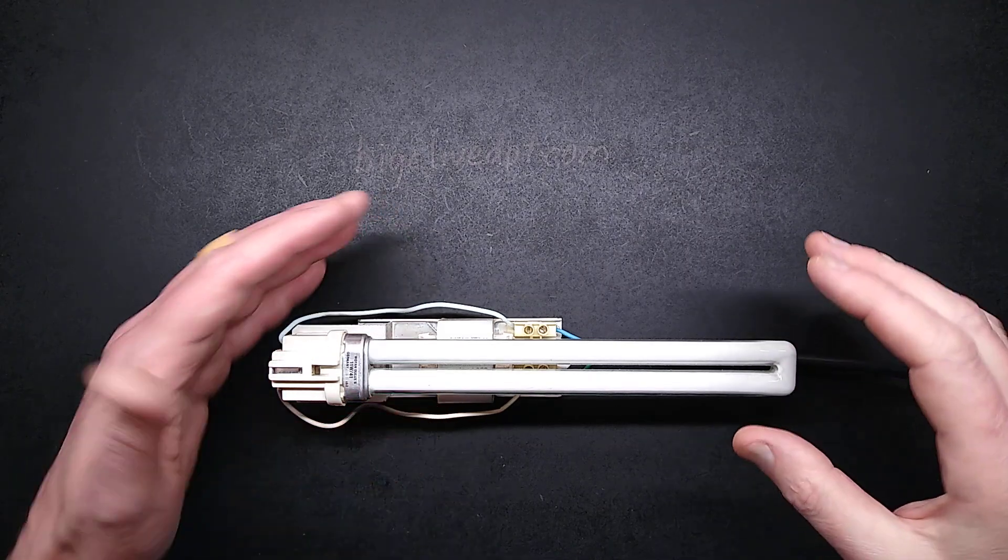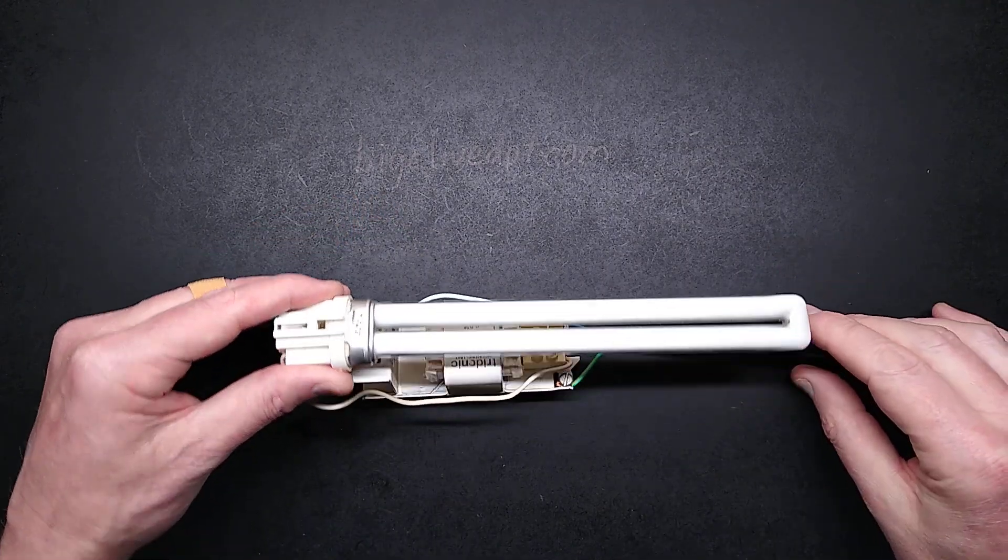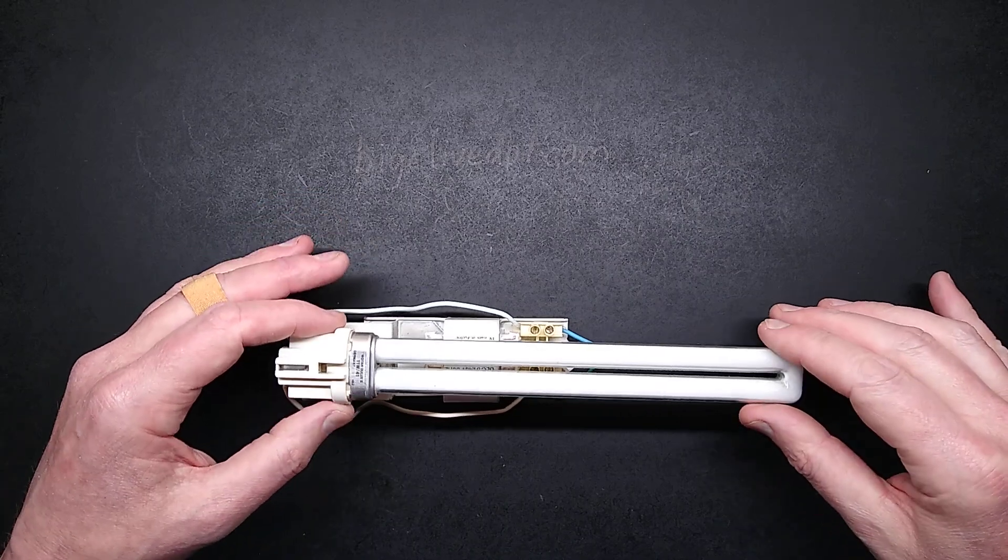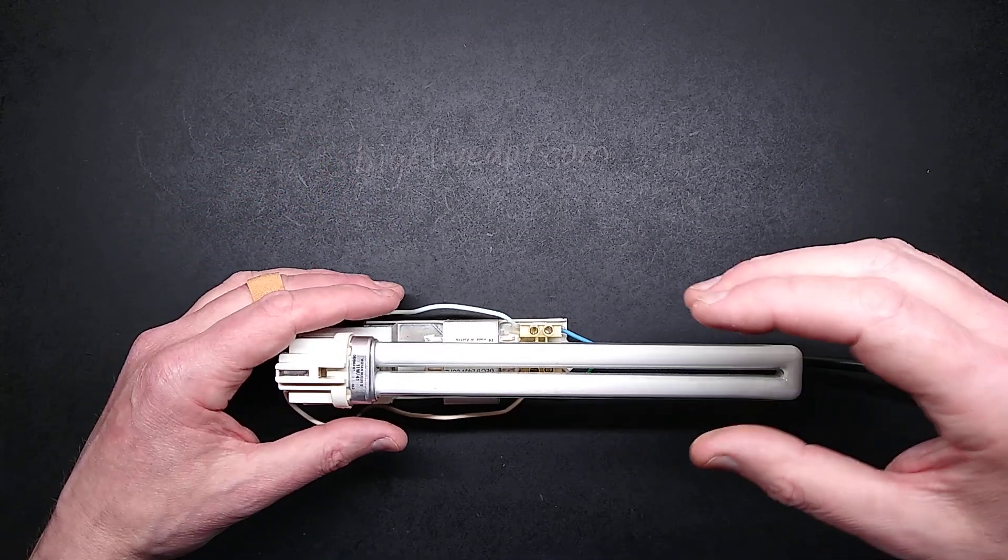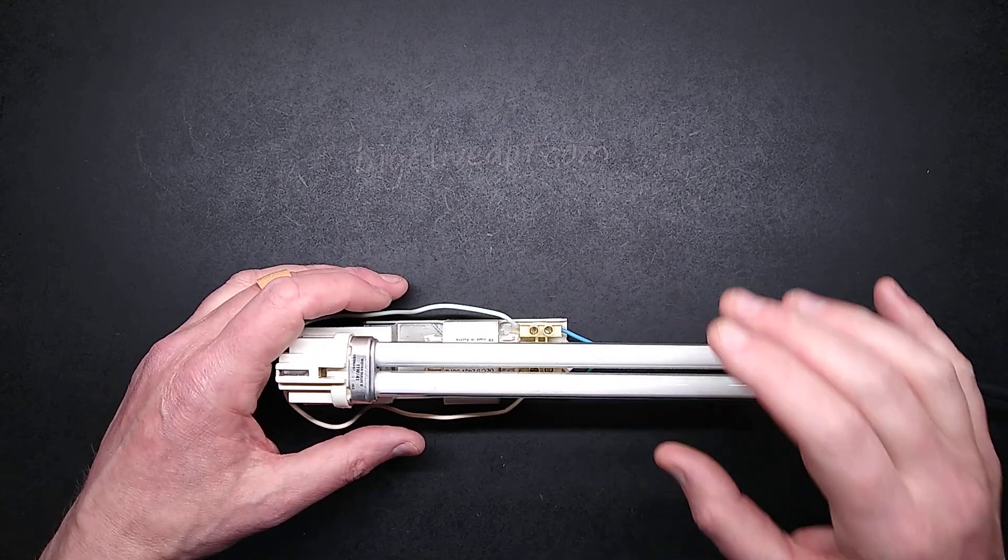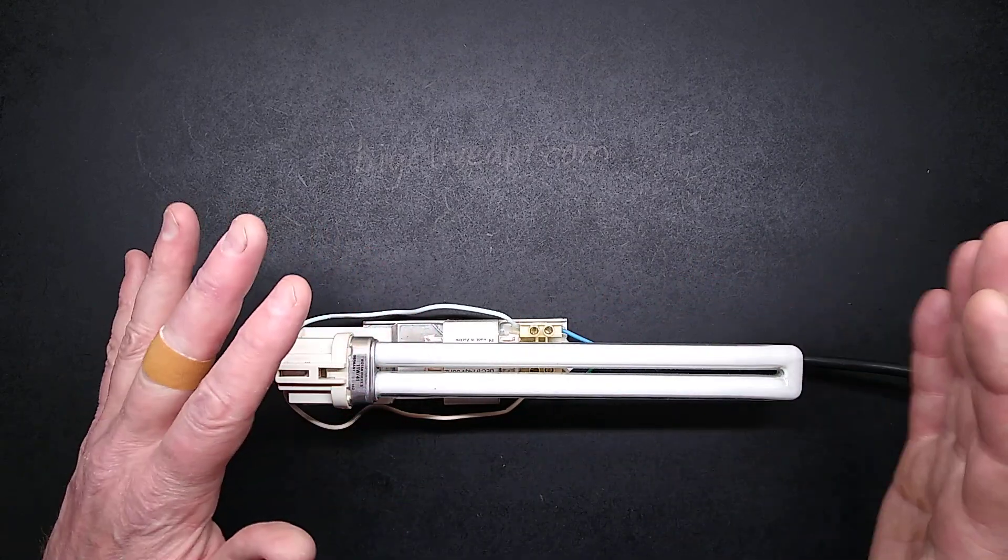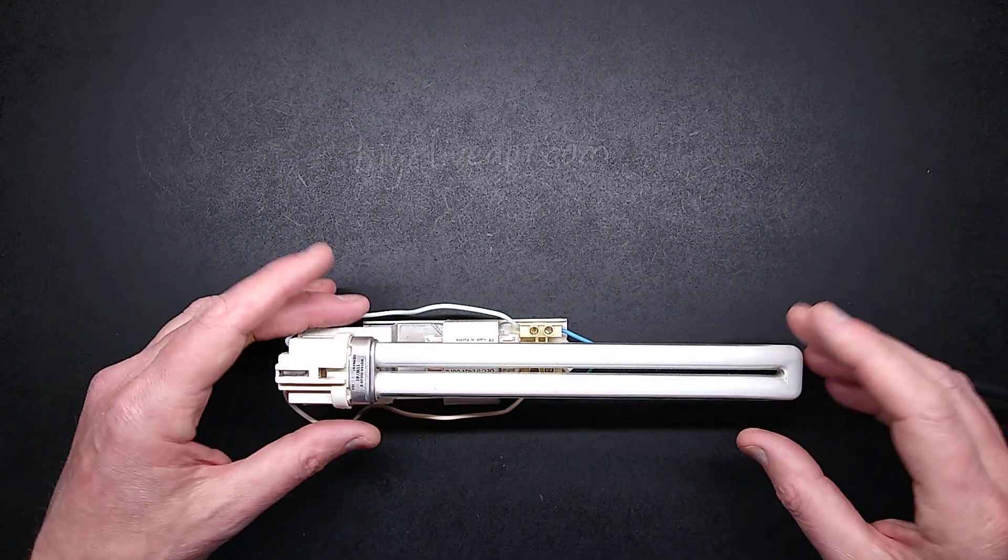While digging through my workshop, I came across an old fluorescent light module out of a sign box. I thought it'd be interesting taking a look at it because although it's not quite vintage yet, it's going to be vintage soon. These things have been replaced completely with strings of LED modules.